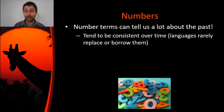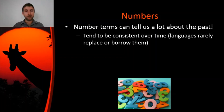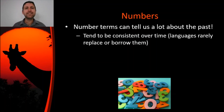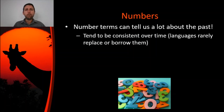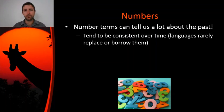One of the reasons number terms are so useful in historical linguistics — the process of looking at language change throughout history — is that numbers tend to be consistent over time. Languages rarely replace or borrow them. Many other words in English get borrowed from French, Latin, or Greek, but when we're wanting to understand the deep history of the English language, we want to look at words that have been in the language as long as possible. Numbers are great because they rarely get borrowed — why would you need to borrow number terms if you already know how to count from 1 to 10?